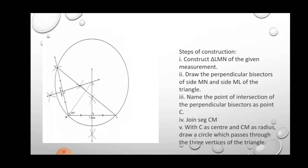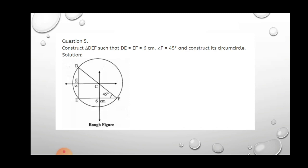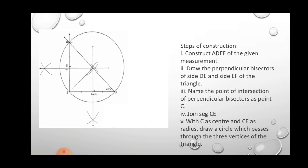In question number 5, construct triangle DEF such that DE = EF = 6 cm and angle F = 45°. This is an isosceles triangle. Take EF as the base, construct the triangle, and then draw perpendicular bisectors to find the circumcenter. Using those steps, draw the circumcircle of triangle DEF. This completes all the exercises.